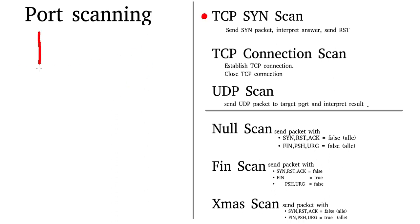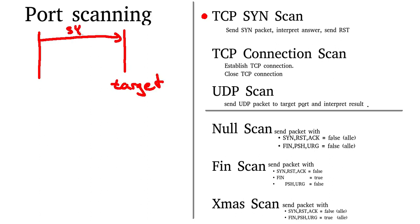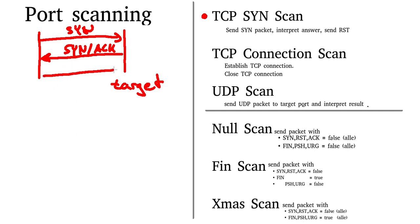Let's start with the TCP SYN scan. This is us and this is our target. What we do is send a SYN packet to the port we would like to scan. If the port is open, the target will answer with a SYN-ACK packet, and then we know the port is open. In the case of nmap, we then send a RESET packet to tell the target we're not actually interested in that port. That's the TCP SYN scan.